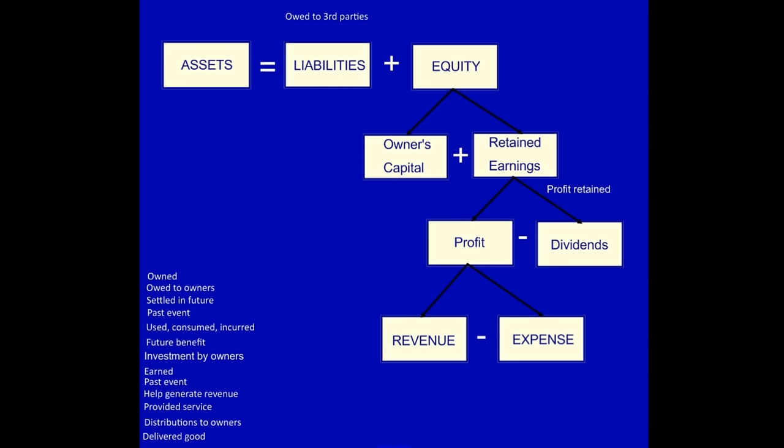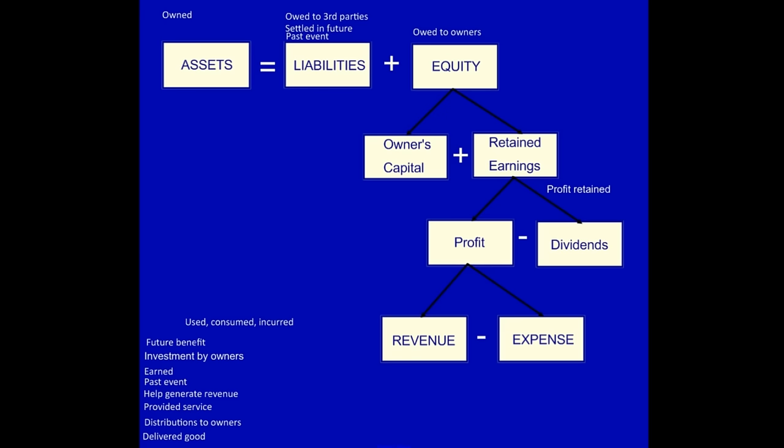'Owned' — the only thing we own in a business is the assets. 'Owed to owners' — we either owe it to third parties or we owe it to the owners. 'Settled in the future' — the only thing that's going to be settled in the future is a liability. 'Due to a past event' — liabilities are due to past events. 'Used, consumed, or incurred' — that can only be true of expenses. 'Must have a future benefit' — assets must have a future benefit.